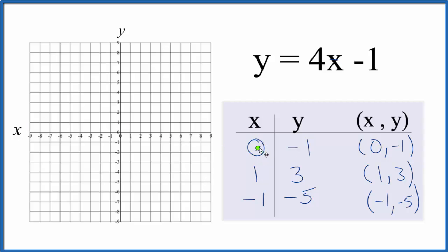So we have 0 for x, negative 1 for y, 0, negative 1. That's our first point. We have 1x, and then y is 3, and then our last point is negative 1, and then negative 5.